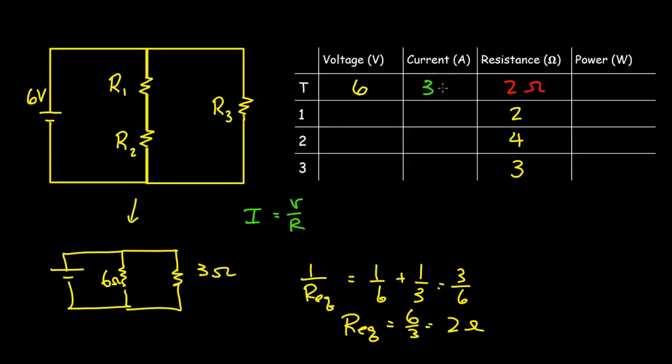The next step is to notice that R1 and R2 is in parallel with R3, and both of them are connected to the battery. When you have resistors that are connected to a battery directly in parallel, then they will have the same voltage as the battery. Now R1 is not going to have 6 volts because it's connected to R2. So R1 plus R2 will be 6 volts, but R3 will be 6 volts.